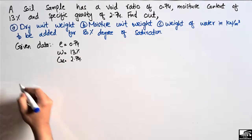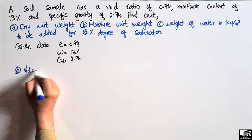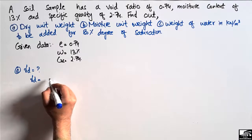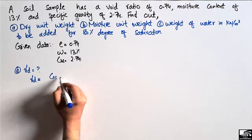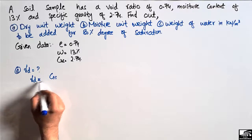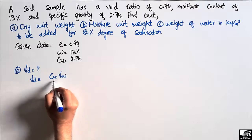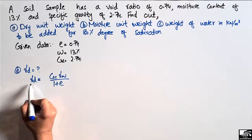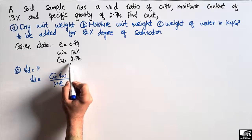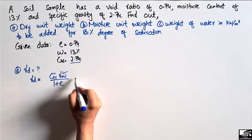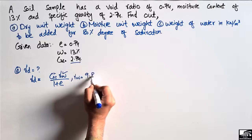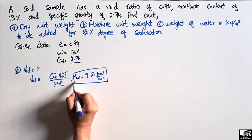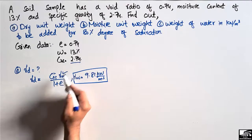The dry unit weight γD can be found using the basic soil mechanics formula: γD = Gs × γw / (1 + e). We know all the factors in this formula. Gs is known, γw is the unit weight of water which is 9.81 kN per cubic meter — this is the standard value — and e is the void ratio, also given.